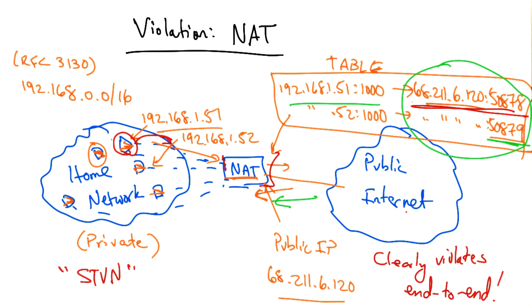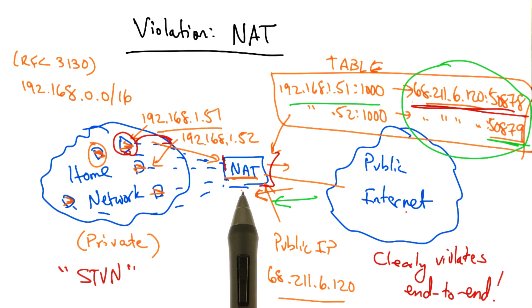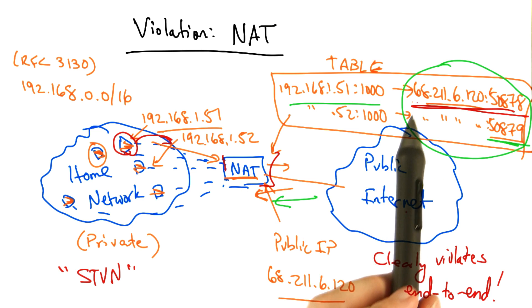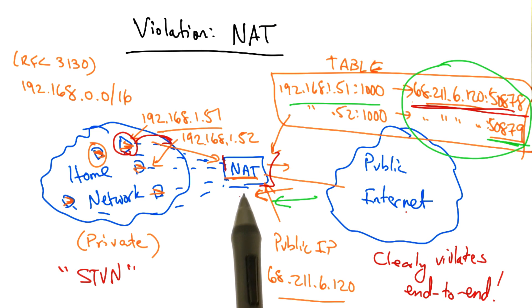This might be done using DNS, for example. It's also possible to statically configure these tunnels or mappings on your NAT device at home.